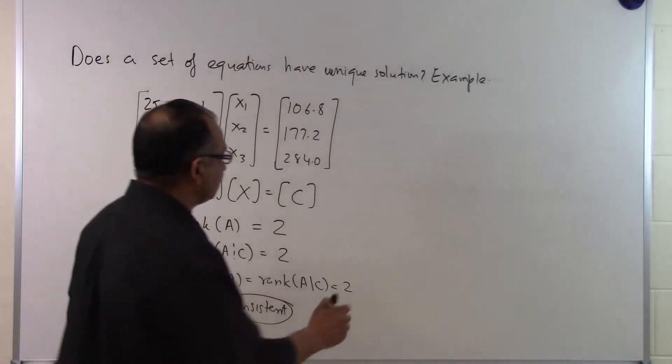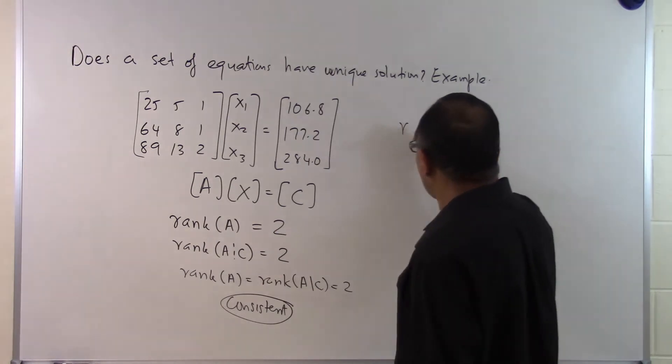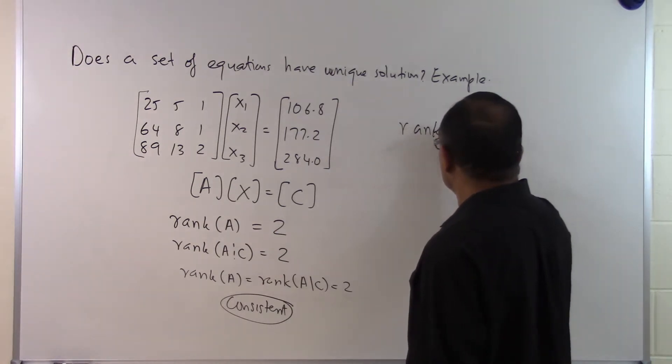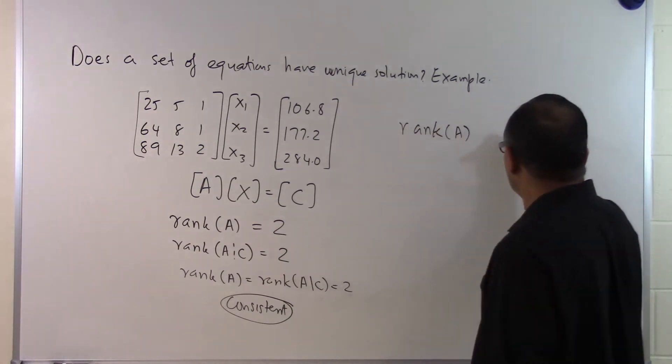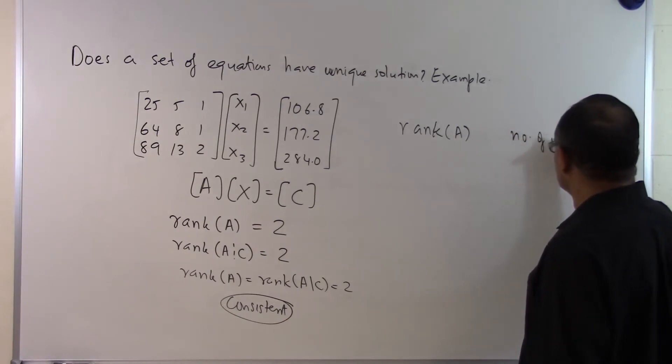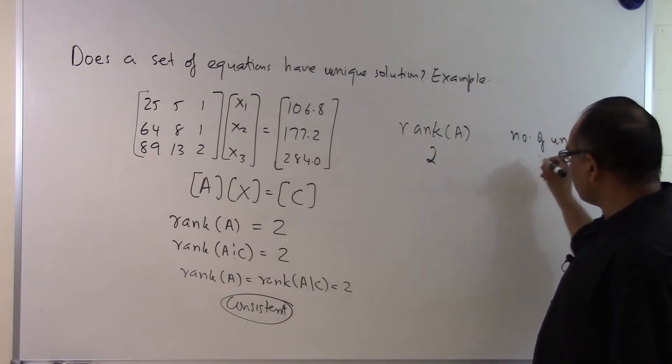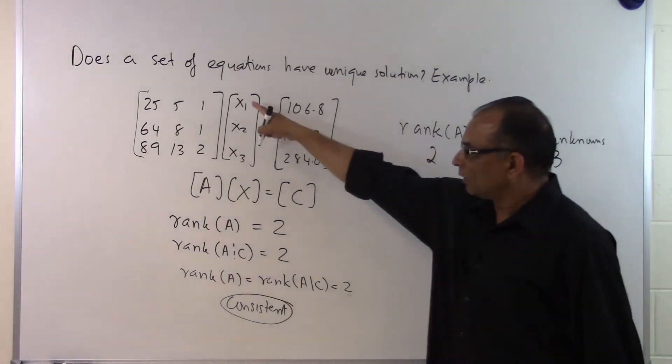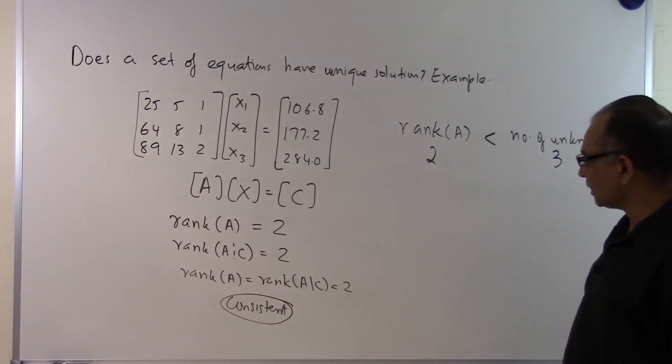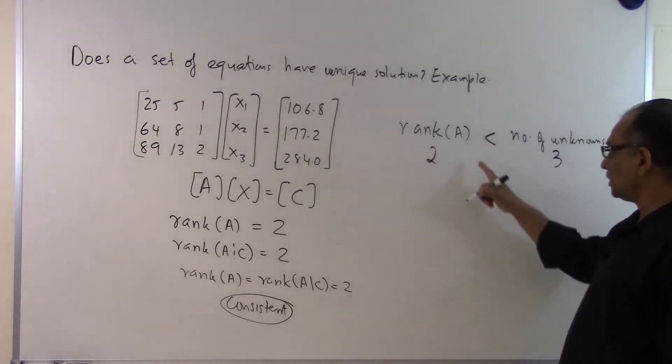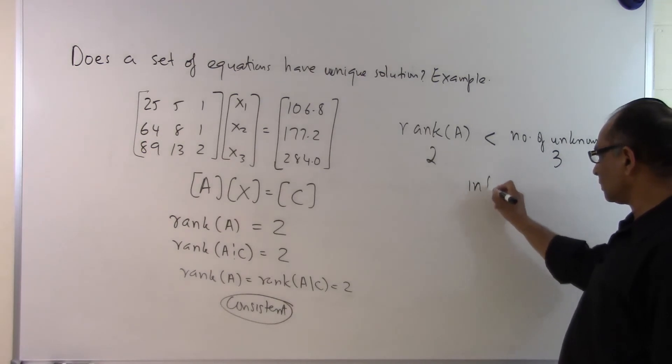So how do we do that? We are going to basically check what the rank of A is and we are going to check the number of unknowns. And we are finding out that the rank of A is 2, number of unknowns is 3. So rank of A in this case is less than the number of unknowns. And since that is the case we will have infinite solutions.